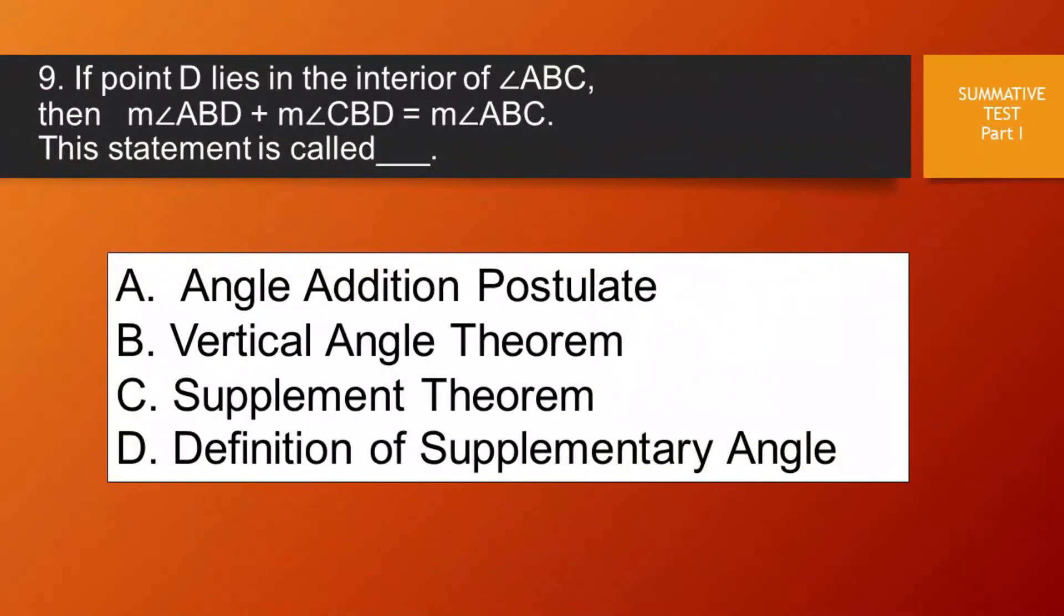Question number 9. If point D lies in the interior of angle ABC, then measure of angle ABD plus measure of angle CBD is equal to the measure of angle ABC. This statement is called blank. Letter A, angle addition postulate. Letter B, vertical angle theorem. Letter C, supplement theorem, or letter D, definition of supplementary angle.